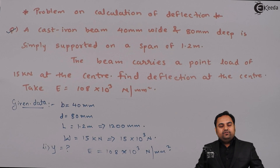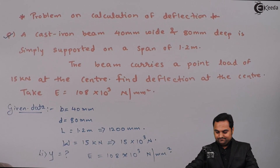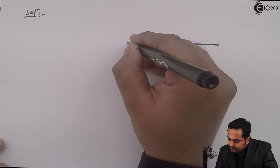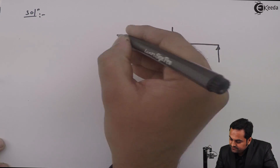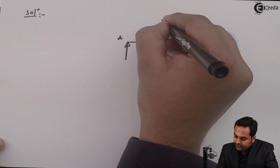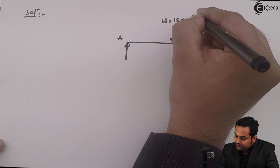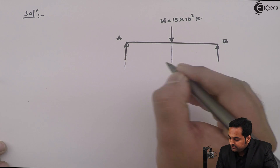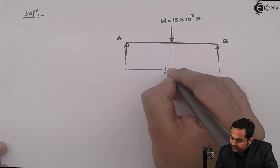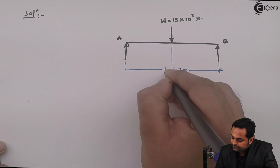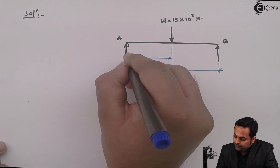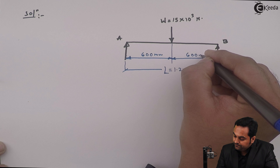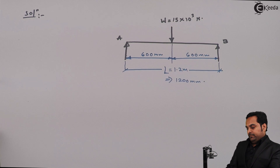Now let us try to get the solution to this problem. First, I'll draw the diagram. The beam is simply supported having a point load at the center; the load value is 15 × 10³ Newton. Since the load is acting at the center, the total span is L = 1.2 meters, so this distance will be 0.6 meters on each side — that is, 600 mm and 600 mm — because the total length is 1200 mm.